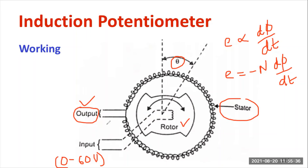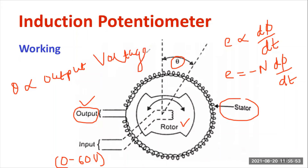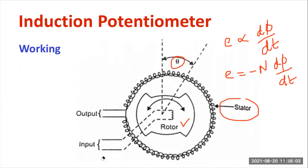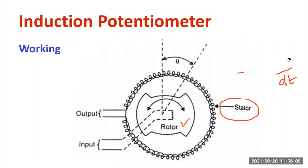The rotor continuously rotates with respect to the shaft rotation. With respect to the angular displacement theta, the output voltage also varies — the variation is sinusoidal. Depending on the movement of the rotor, the output voltage varies, so we can write that angular displacement theta is directly proportional to the output voltage. Based on the output voltage, we can identify the angular displacement of the rotor. This device is more accurate when the rotation range is between plus or minus 45 degrees.